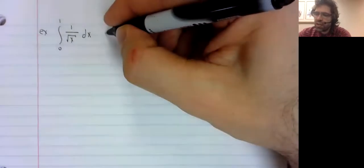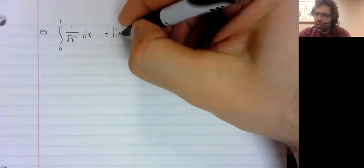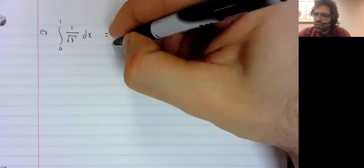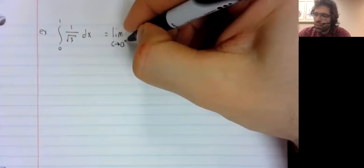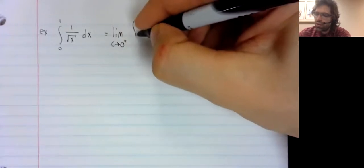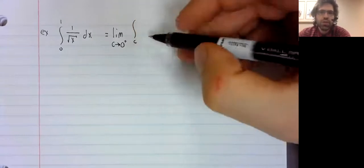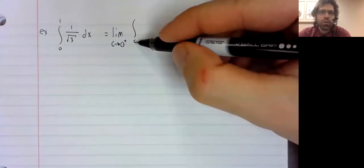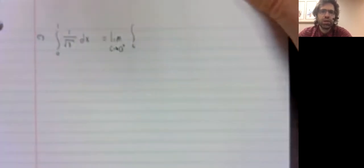So according to what we said in the previous video and the previous set of notes, we should replace the vertical asymptote with a number that approaches the vertical asymptote.